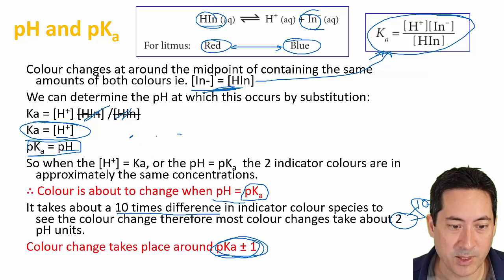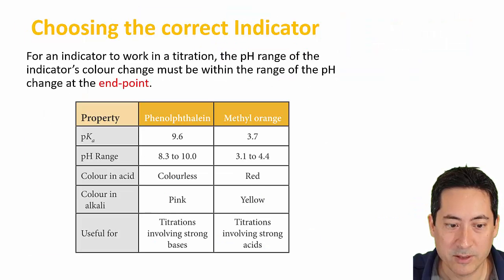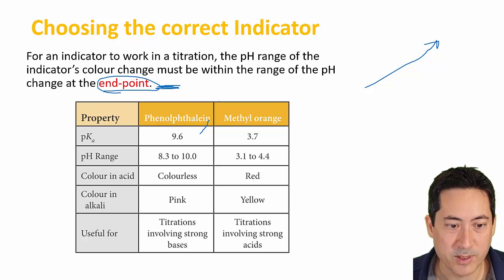That is the point where we're going to be able to make a detection with our eyes to see that the color changes. That's how you determine which indicator to use—you look at the pKa value. You also need to look at what the titration curves are. Make sure you've watched the terminology video so you know the difference between endpoint and equivalence point or stoichiometric point.